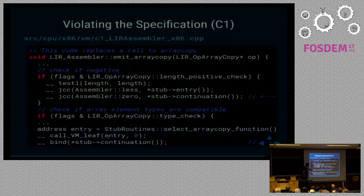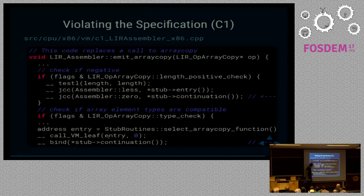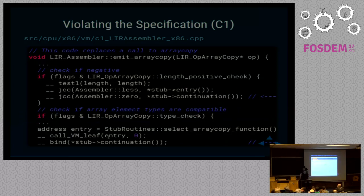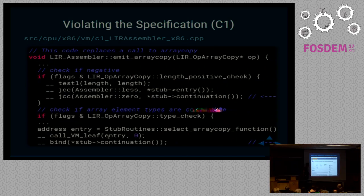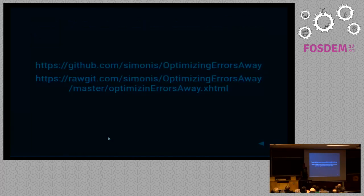Here is the code where this check is generated in C1. We check if negative: if the length is less than zero we jump to an error stop. Otherwise if length is zero, we go directly to continuation at the end, before even calling the arrayCopy routine. The element type check is shortcutted away — and that's where the error happens. This bug was fixed in November. All the slides and code are on GitHub if you want to have a look. Thank you very much.